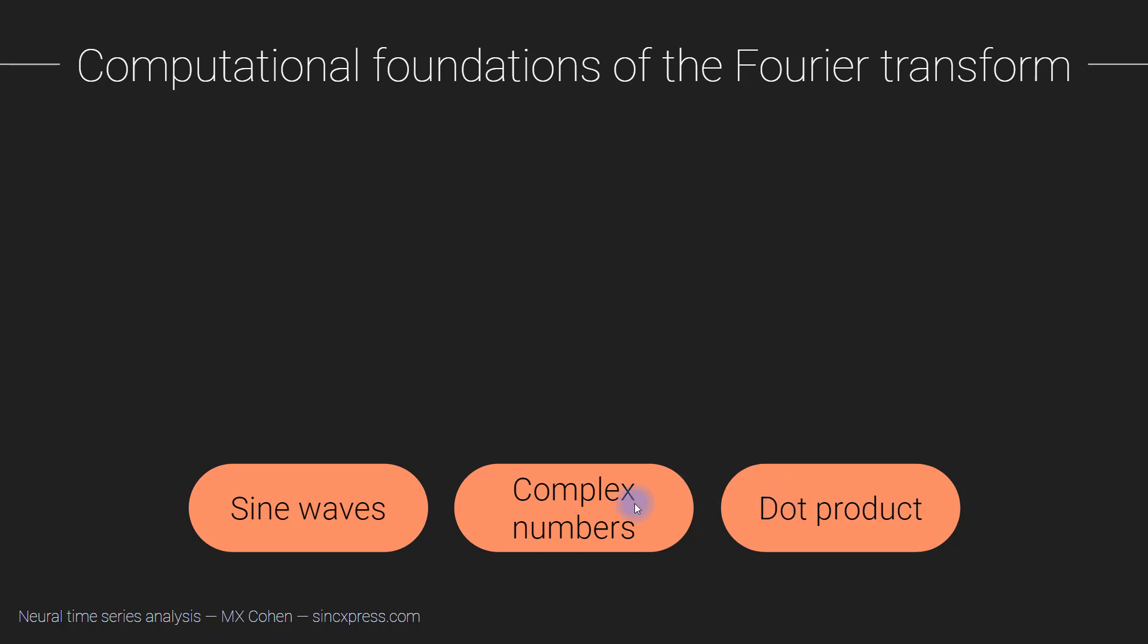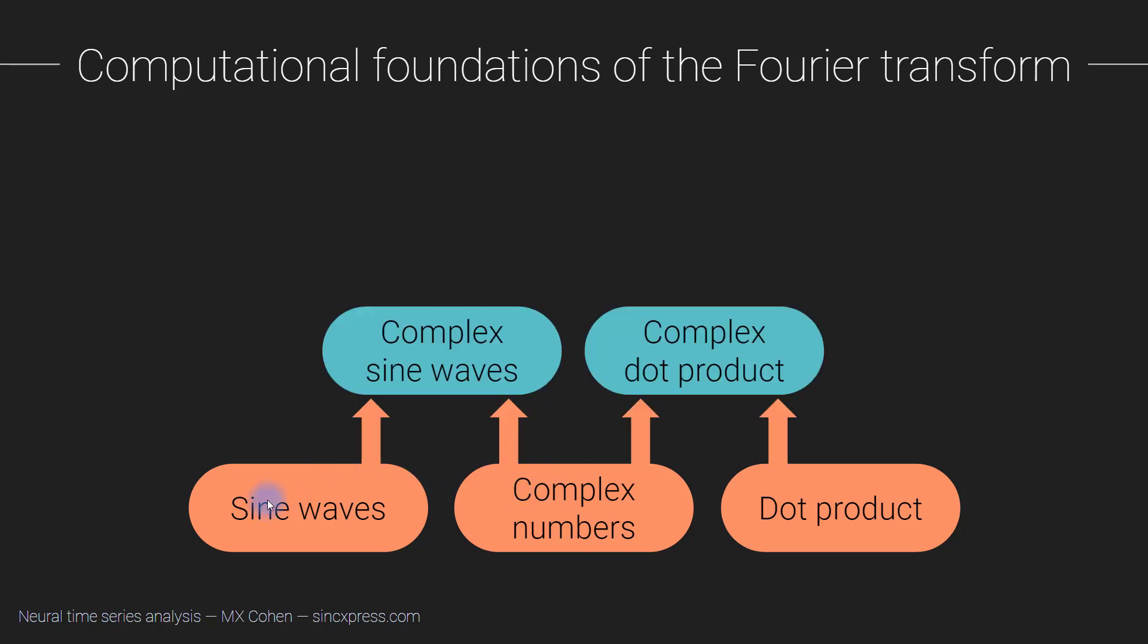The next layer of understanding the Fourier transform is basically just to combine these things. We're going to combine sine waves and complex numbers to create something called complex sine waves. Then we're going to combine complex numbers and the dot product to create a complex dot product.